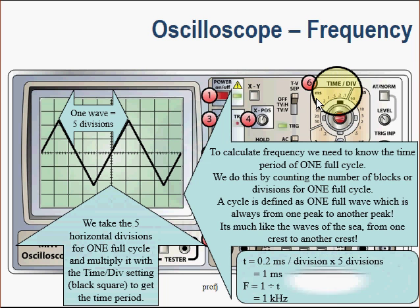So the 0.2 milliseconds per division time setting is then multiplied by the five divisions which represent one full cycle. This gives me a total time of one millisecond. Frequency is simply one over T, which results in a frequency of one kilohertz for this specific signal.